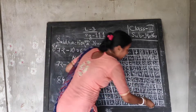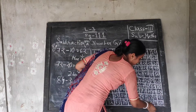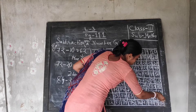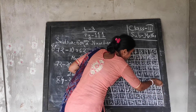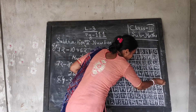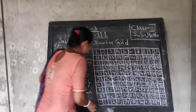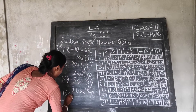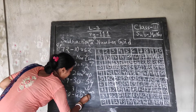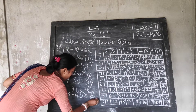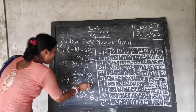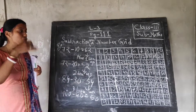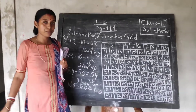Take another example. Suppose 100. From 100, if you move four boxes up, then you will get how much? 100 minus 40 is how much? 60. We have moved four boxes up. Like this, it will continue.